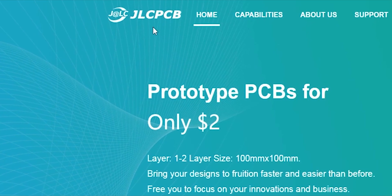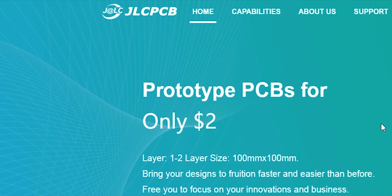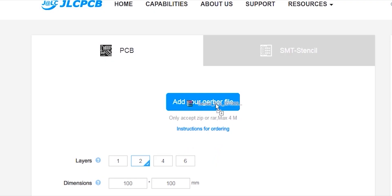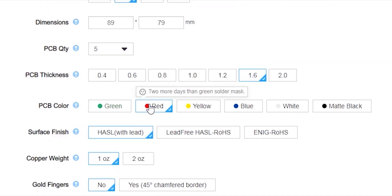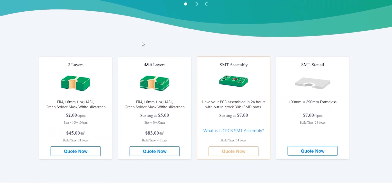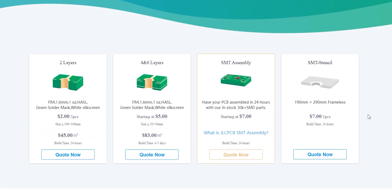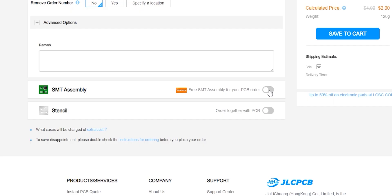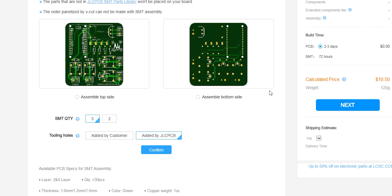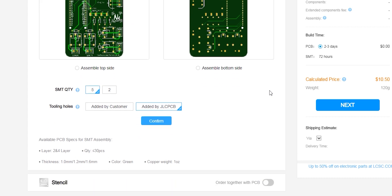This video is sponsored by JLCPCB. From them you can order your PCBs only for $2. Just upload your Gerber files to their website and then you can choose any color solder mask for the same price of $2 which is sweet. They offer service for 2 layer, 4 layer and 6 layer PCB. You can also order your SMD stencil along with your order. Now they have even started the PCB assembly service only for $7. So click the first link in the video description to learn more.